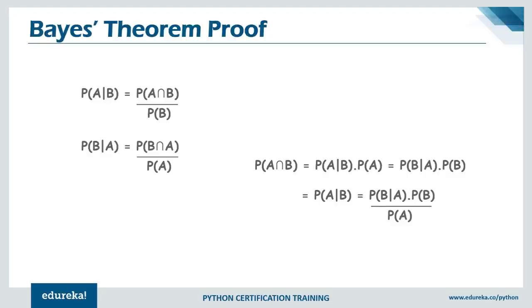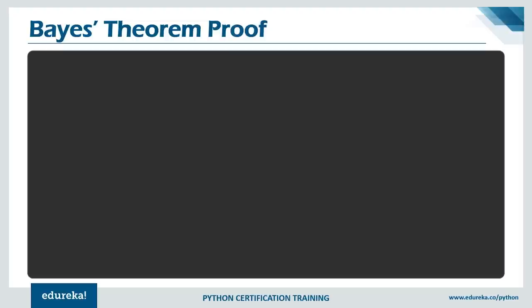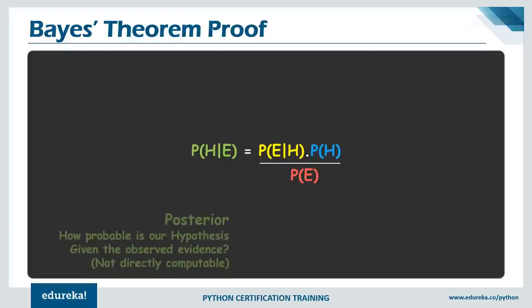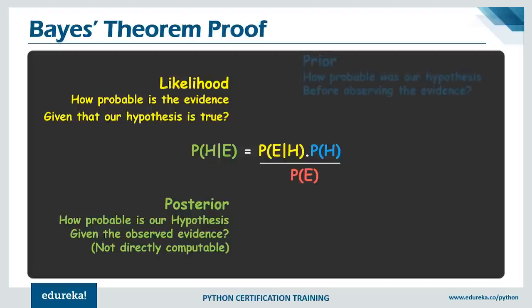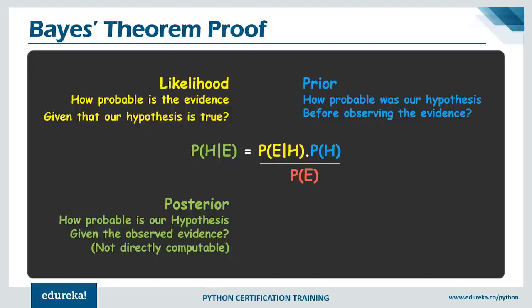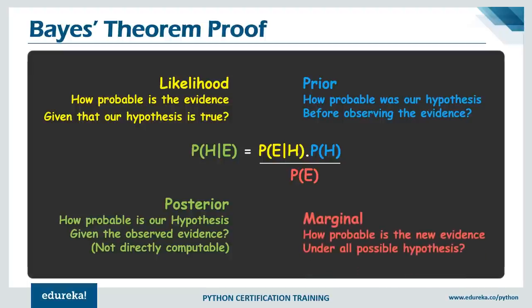While this equation applies to any probability distribution over events A and B, it has a particularly nice interpretation when A is represented as hypothesis H and B is represented as observed evidence E. In that case the formula is: P(H|E) = P(E|H) × P(H) / P(E). This relates the prior probability P(H) to the posterior probability P(H|E). The factor that relates the two is known as the likelihood ratio. Bayes' Theorem can be rephrased as: posterior probability equals prior probability times the likelihood ratio.